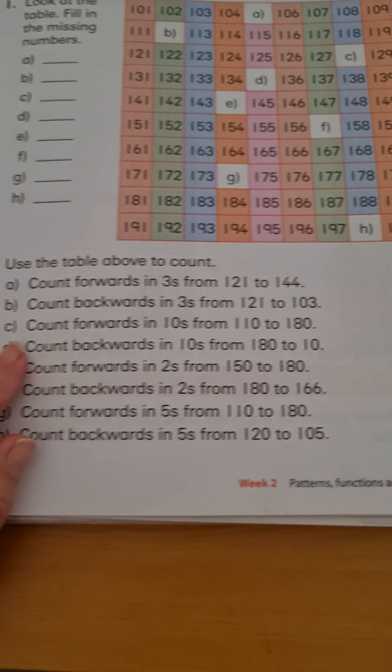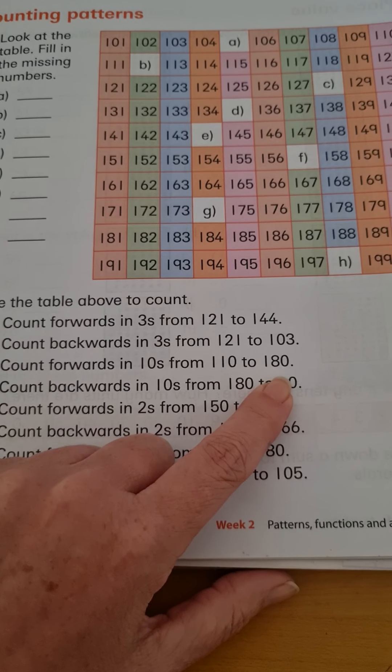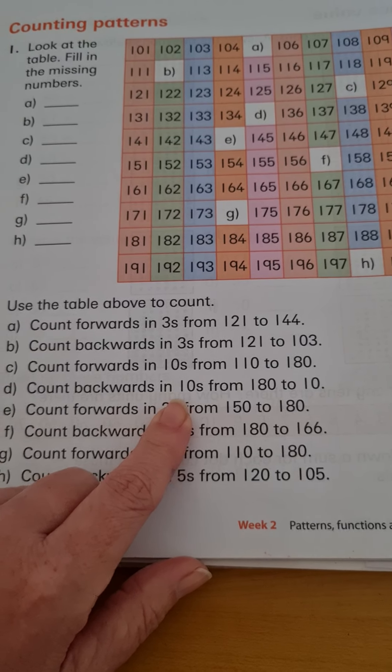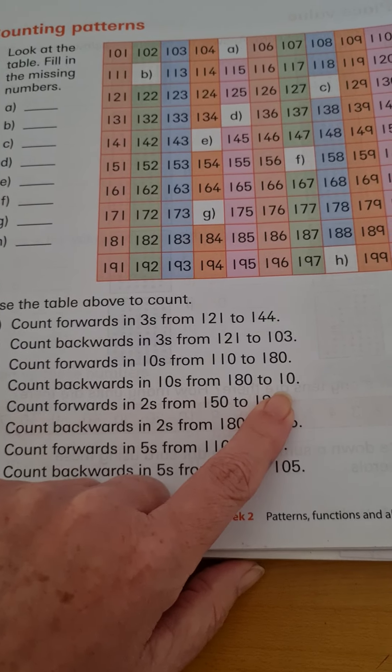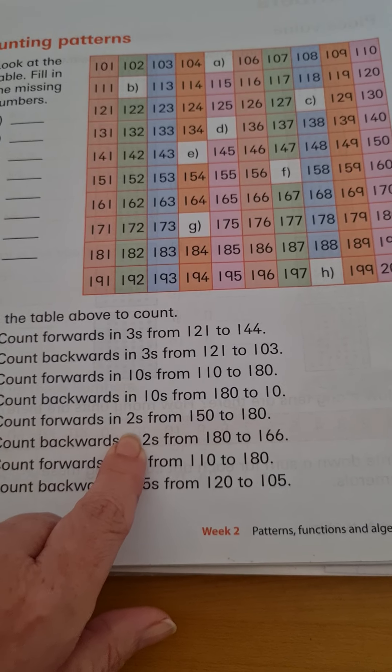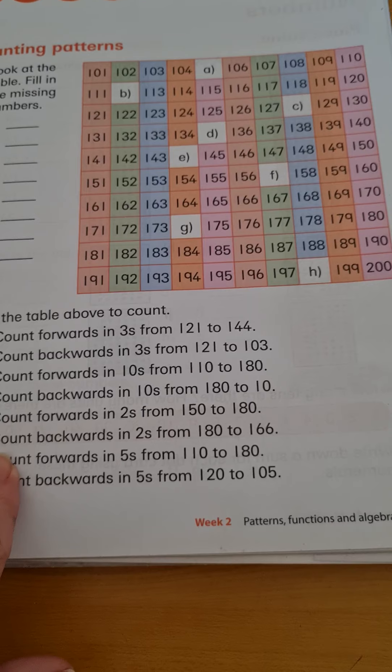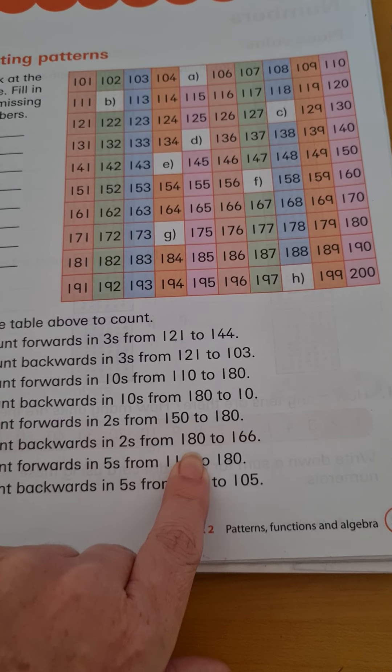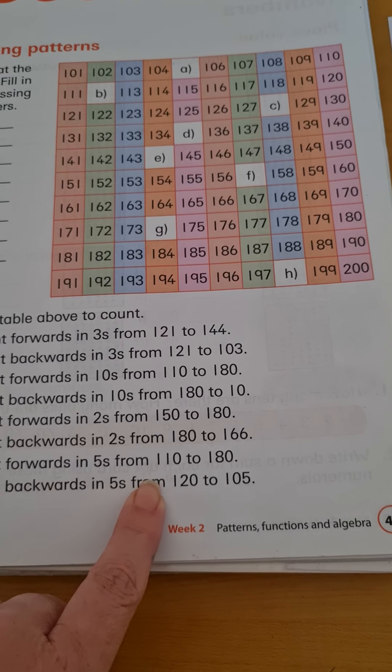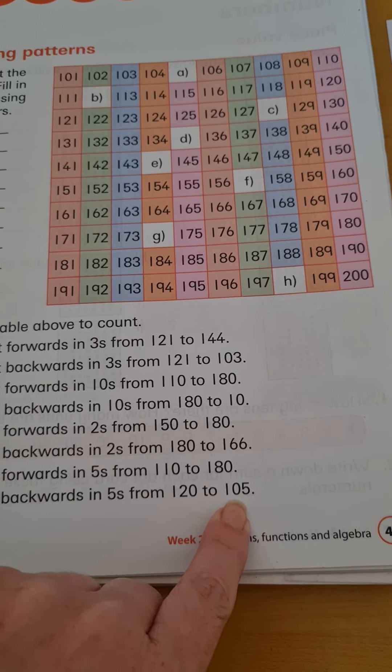Next you will do C and you will count forwards in tens, 110 to 180, and write out the numbers that you say when you count. Then try backwards in tens, 180 to 10—that's quite a lot of numbers. Then E, count forwards in twos, 150 to 180, and write out the counting in twos pattern. Then do it backwards, 180 to 166. Forwards in fives, 110 to 180. Backwards in fives, 120 to 105.